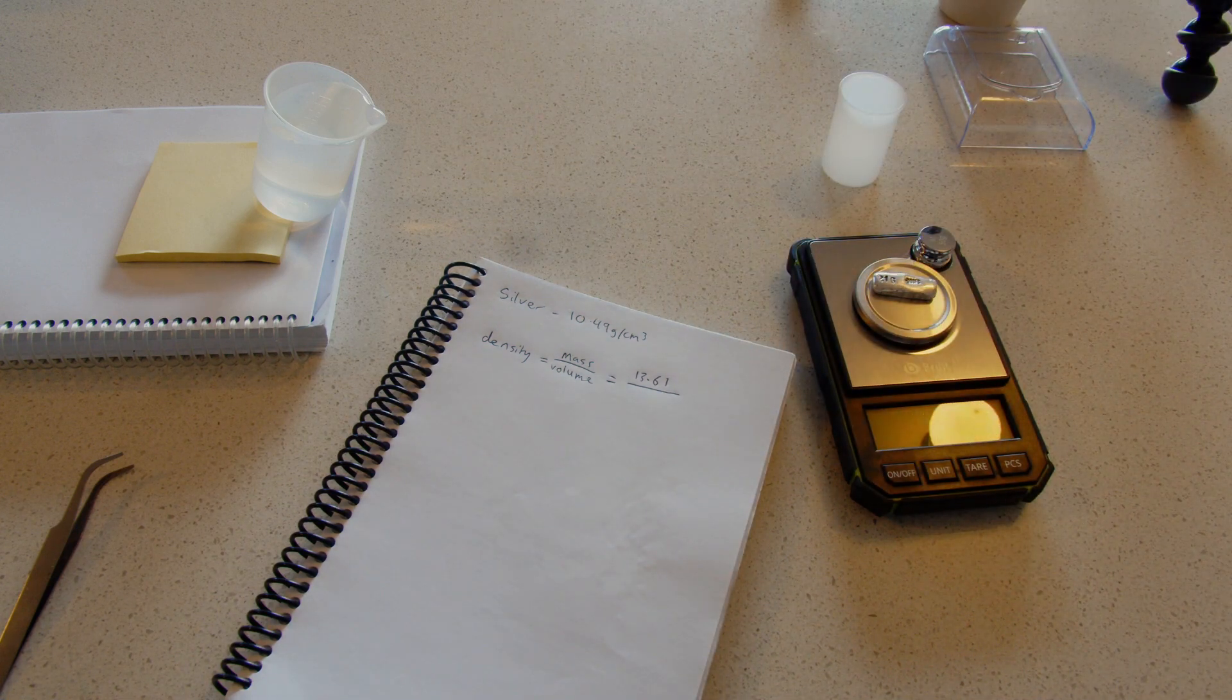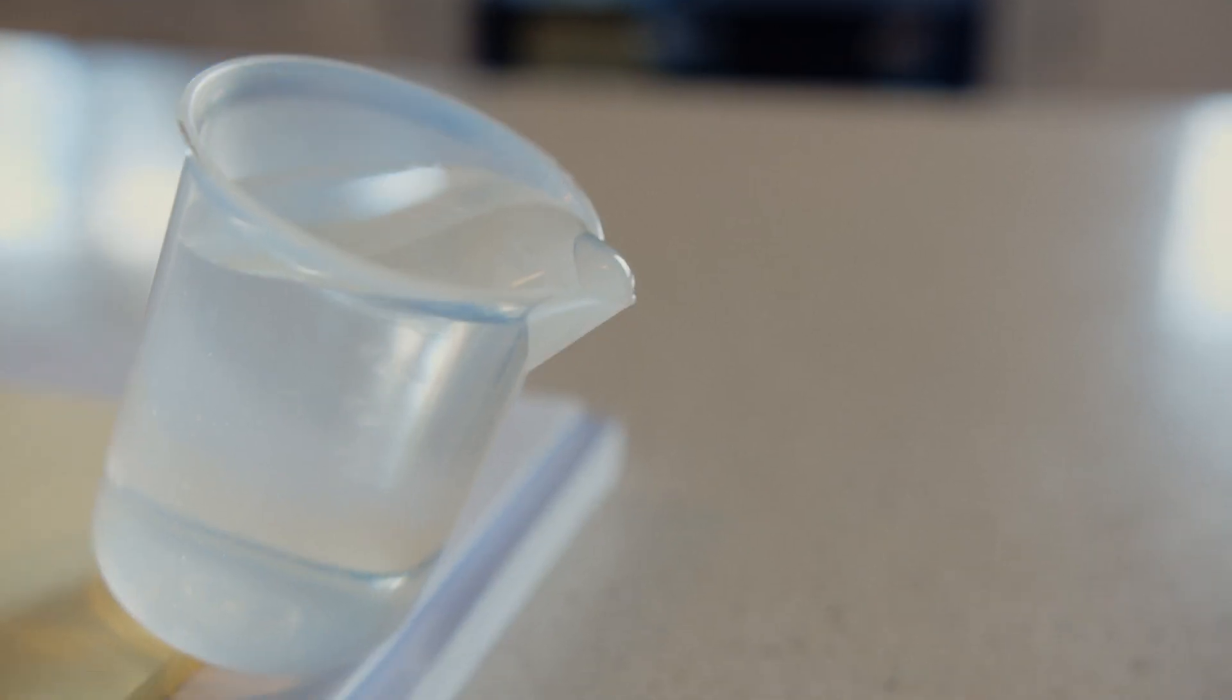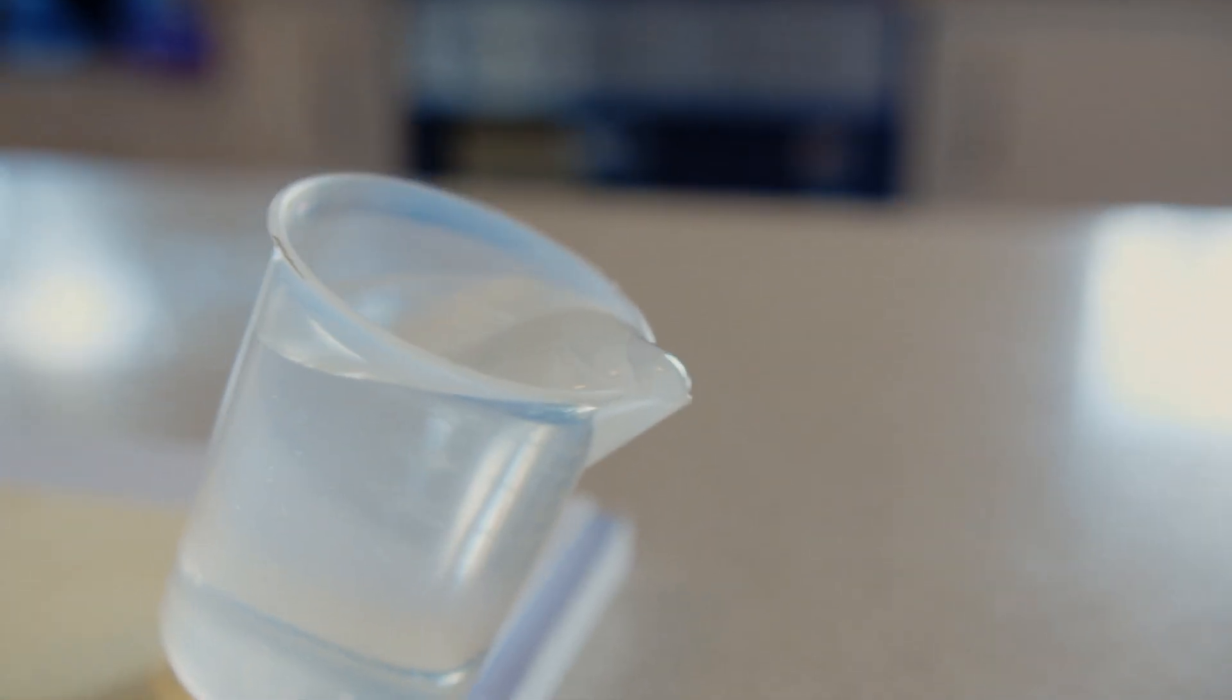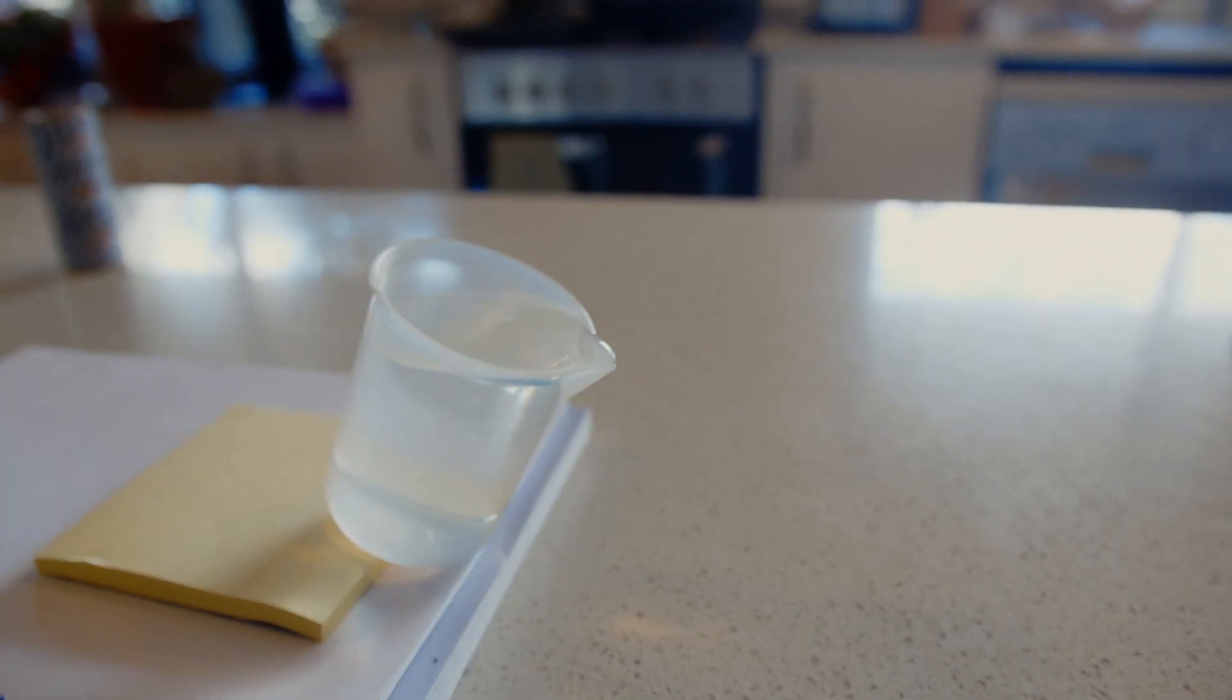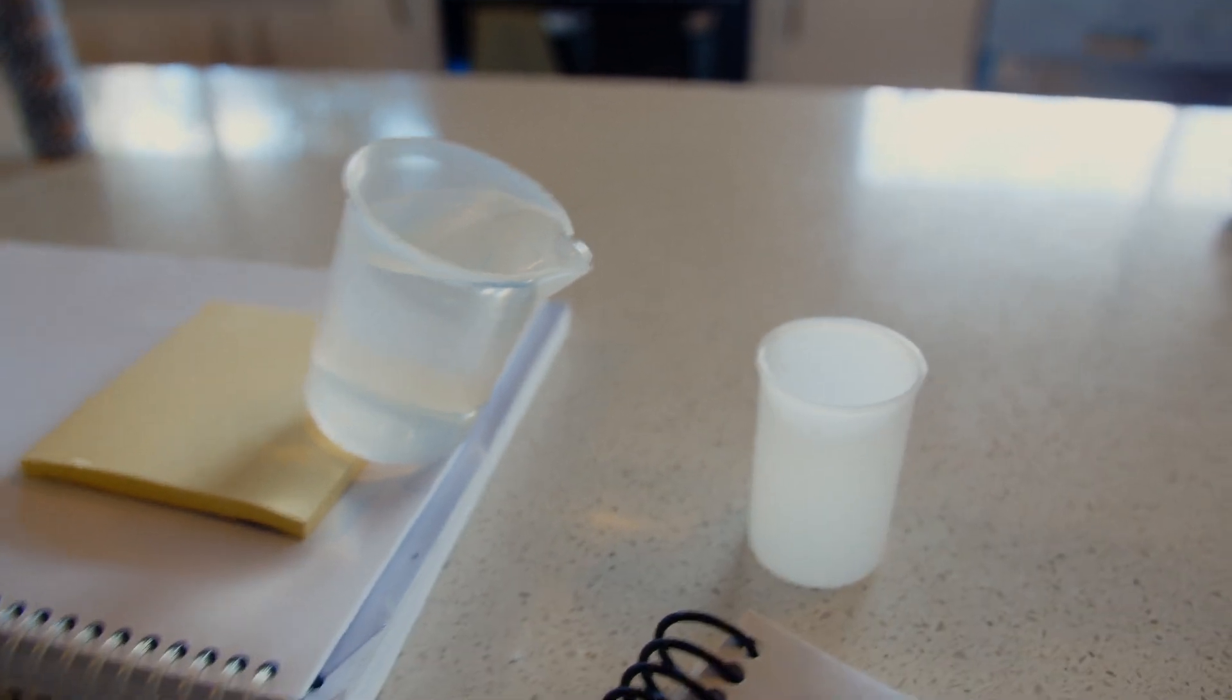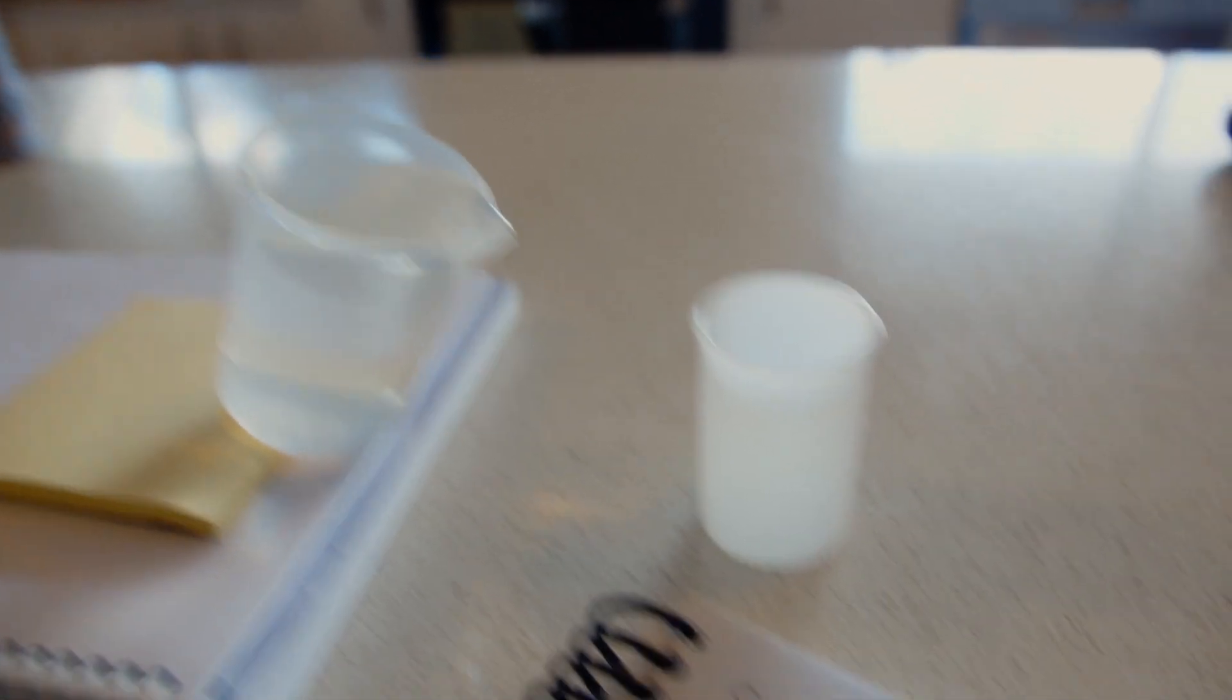So I have a different method using this. Water is filled right up to the edge, so the moment I add something, it's going to spill over. The plan is to use this little cup, which weighs exactly 4 grams. I'll put the silver in this one, catch all the spilled water, and then measure that to get the volume of the silver.